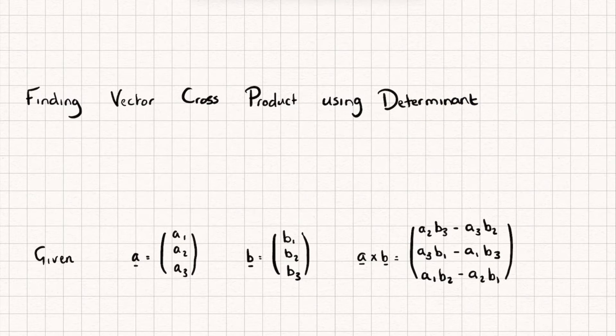Okay, so let's look at something that we're already familiar with. If we've got two generic vectors a and b as you can see here, then the cross product of the two, a cross b, gives us this third vector which happens to be perpendicular to both a and b.